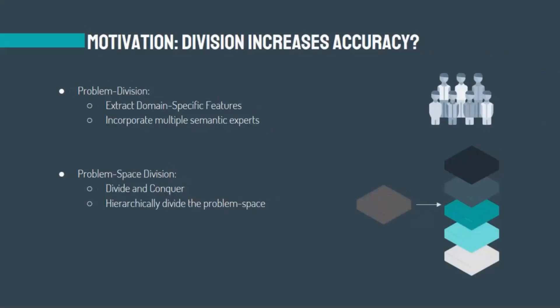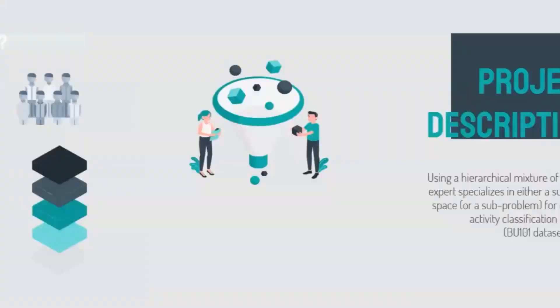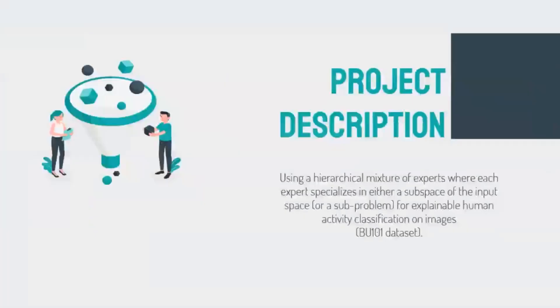This question drove two main approaches that we adopted. First, problem division, where we divided the problem among many semantic experts each looking at the problem from a different aspect, extracting several sets of semantically driven features. The second approach was problem space division, where we divide the problem space in a divide-and-conquer fashion such that every expert is responsible for classifying a certain category of actions in a hierarchical fashion. This led to our hierarchical mixture of experts for explainable human activity classification.